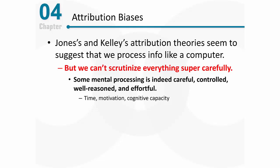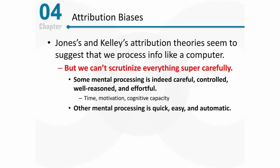If that's the case, we often want to take some shortcuts. Sometimes, of course, we also don't have the cognitive capacity. There are a lot of things that compete for our attention, and when I'm trying to make sense of other people, when I'm trying to scrutinize social information, I might not have the ability to do so. That's why much of our mental processing is really very quick, very easy, and very automatic. We are not carefully scrutinizing every piece of social information.